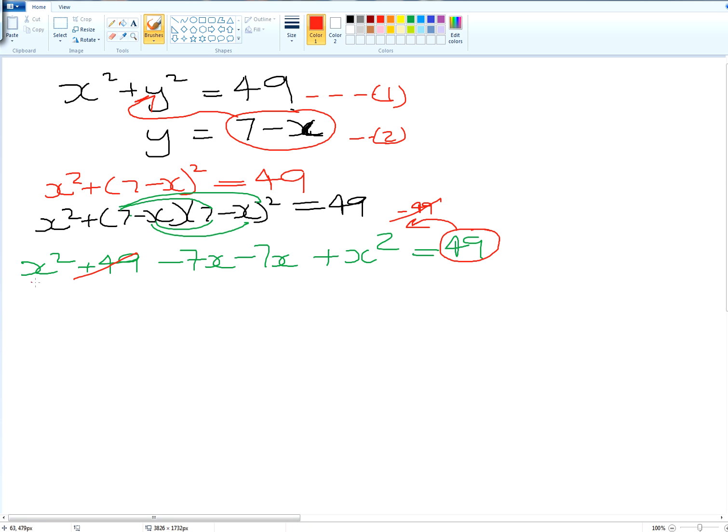Alright, we have 1x squared here and another one here. That gives us 2x squared. Minus 7x minus 7x will give us minus 14x is equal to zero.